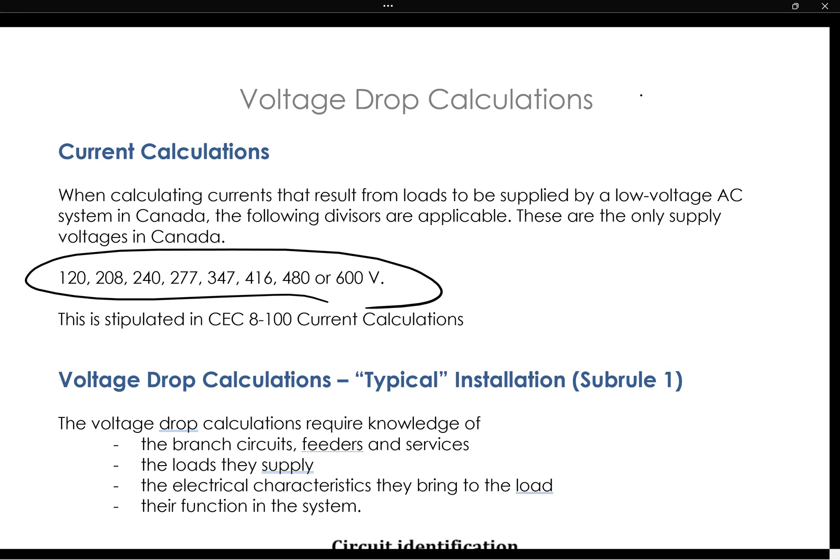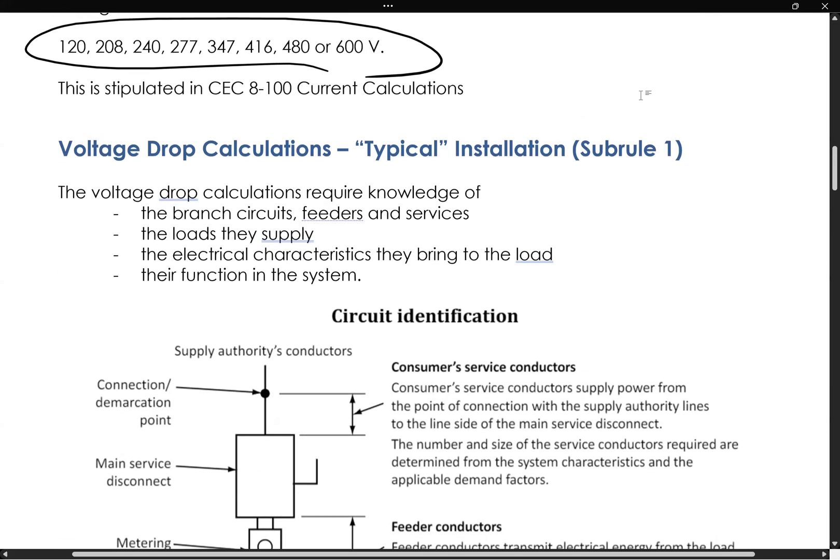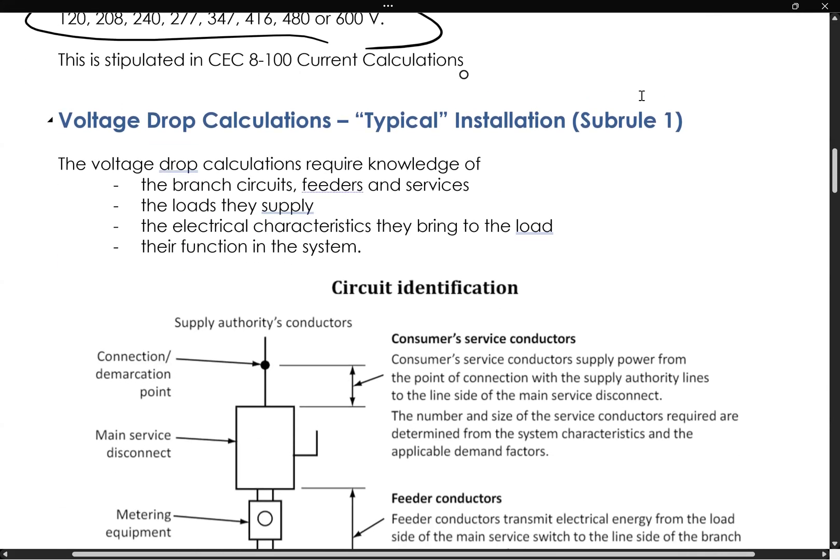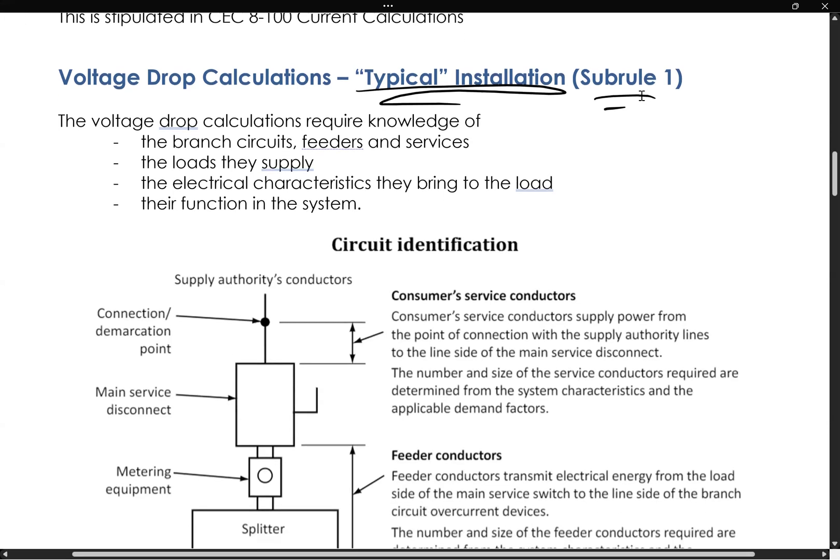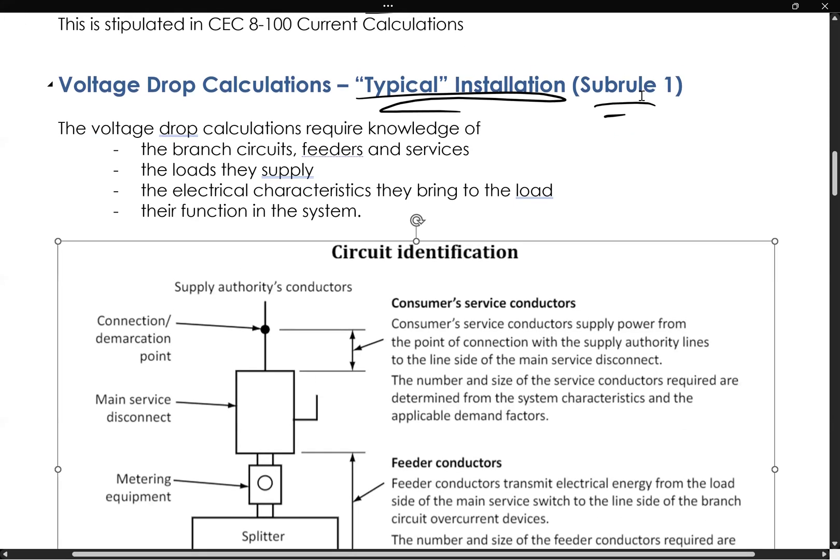Voltage drop calculations are not a difficult type of calculation at all, but first let's look at what these calculations pertain to. And all we're going to talk about today is the typical installation that's in sub-Rule 1 of Rule 102, Section 8 of the Canadian Electrical Code. And we do really need to know what branch circuits, feeder circuits and services and what our loads are to do these calculations.